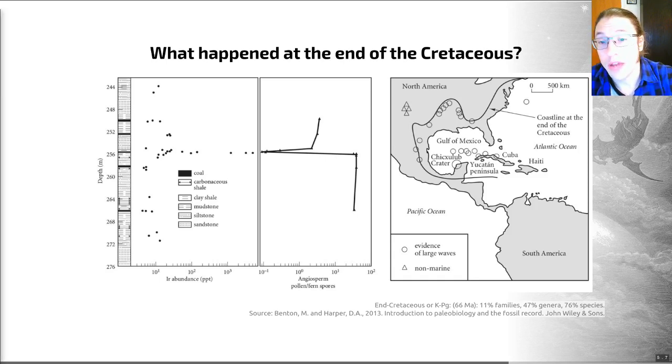What we now believe happened is that this impact threw up a huge cloud of dust that encircled the globe, blacked out the sun, and that caused extinction worldwide by stopping photosynthesis in land plants and phytoplankton. Those are the primary producers of our ecosystems and when they died out the food for the herbivores had gone. The herbivores died out followed by the carnivores.